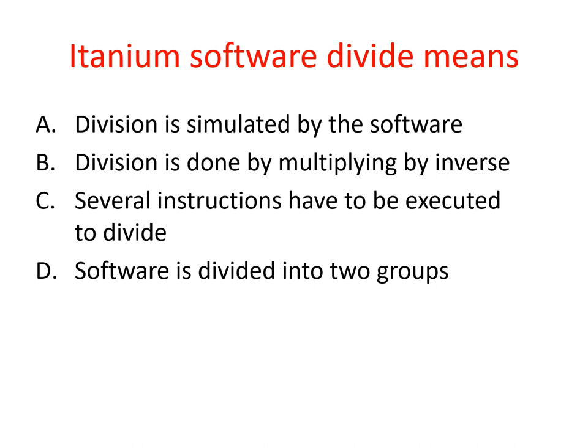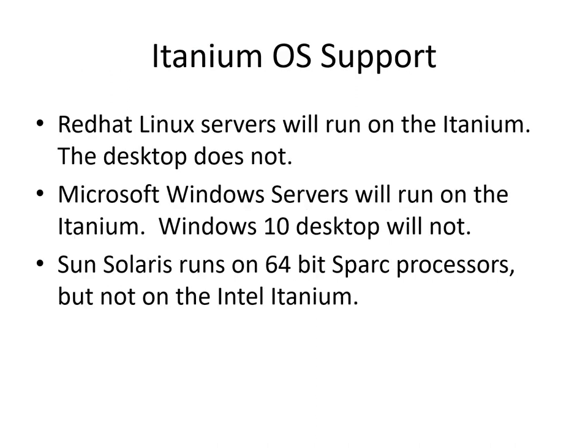It takes several instructions to execute a divide. There are machines, such as the Crays, which don't have a divide instruction but do have an inverse instruction — you invert something and multiply by the inverse, and calculating the inverse is easier than division. Although a general Windows desktop will not run an Itanium machine, Red Hat servers and Windows servers will run Itanium.